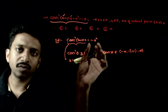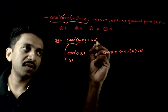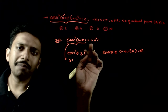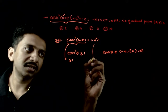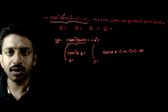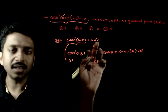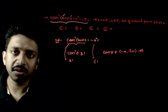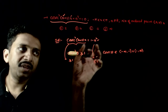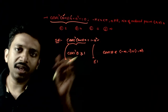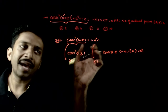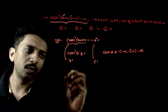On the other hand, 1 minus a squared: since a squared is always positive, 1 minus a squared is always less than or equal to 1. So if these two sides have to be equal, there is only one possibility.